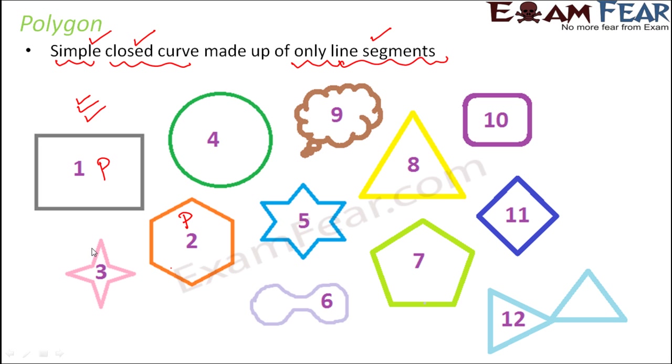What about three? Three again is a closed curve. It is also a simple curve because it is not crossing over itself and it is made up of line segments. So this one is also a polygon.